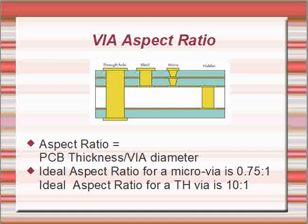So basically if we see a through hole via, the aspect ratio is typically 10:1, ideal aspect ratio actually. And for a microvia it is 0.75:1. So generally people maintain 1:1 for the microvia. And also any aspect ratio for a through hole via greater than 5:1 is acceptable.